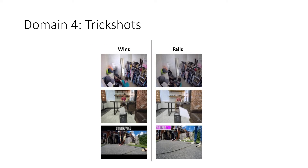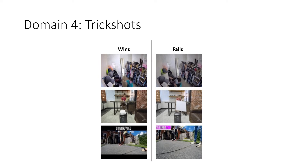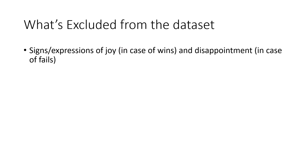For our last domain, we chose trick shots, which involves competitive activities like flipping bottles. We also made sure to exclude samples or parts that would allow our models to take shortcuts. For example, we made sure not to include any part of videos where people are showing positive or negative emotions, as that may give away the class category.